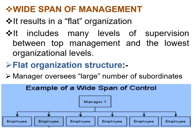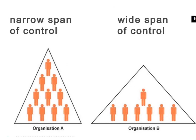In this organization structure, there are two levels of management. Level 1 is the manager, and level 2 consists of six employees. In this example, organization A follows narrow span of control and organization B follows wide span of control.